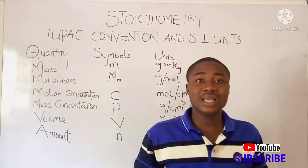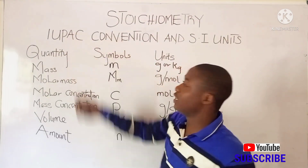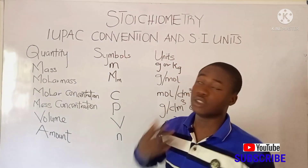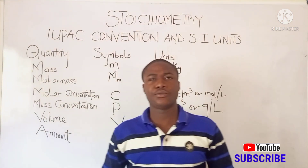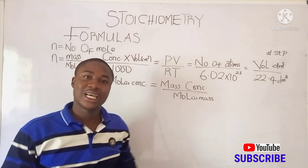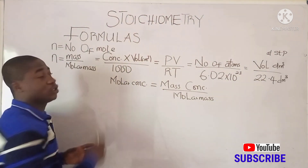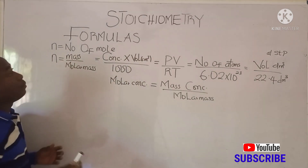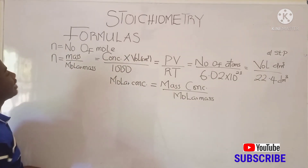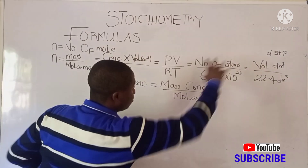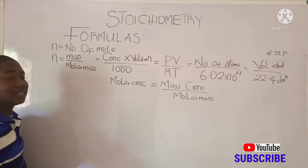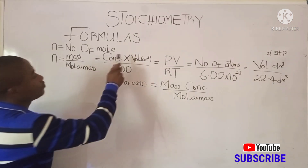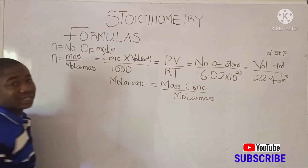There are formulas that relate these quantities. I'll be giving the formulas and also solving different problems on stoichiometry of various reactions. The symbol n represents number of moles. The first formula is: n = mass / molar mass. Another way to find number of moles is: n = concentration × volume / 1000.